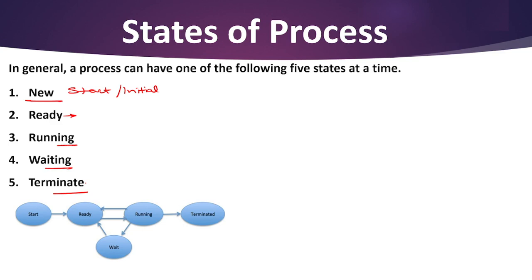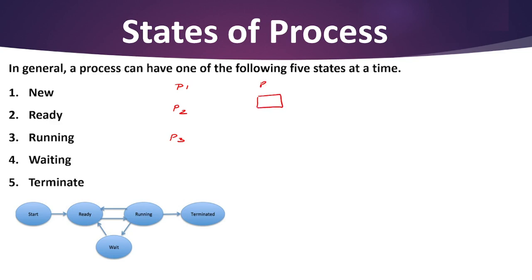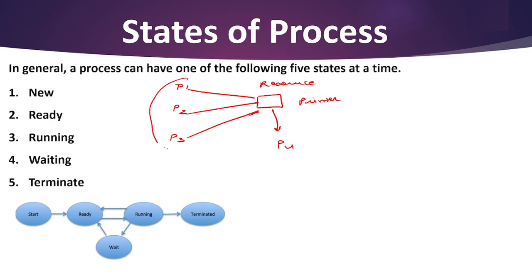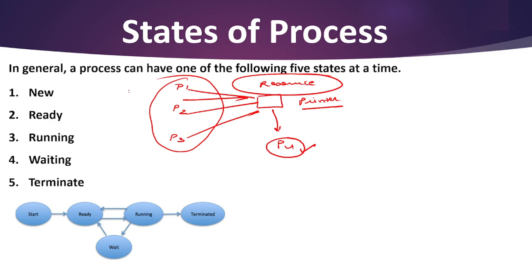Imagine a process that executes a simple addition operation and prints it. Let's say we have three processes P1, P2, and P3. All three processes want one resource — let's say that resource is a printer. All these processes want to print pages and the printer is busy with another process called P4. So these are the processes and this is the resource. All these processes request the operating system for that particular resource.